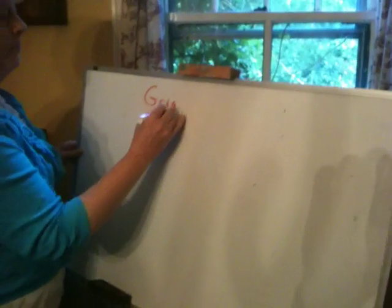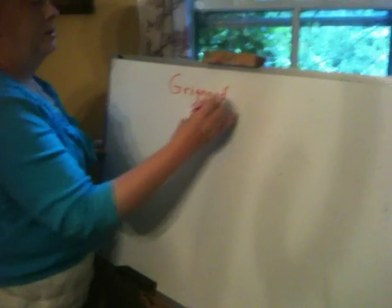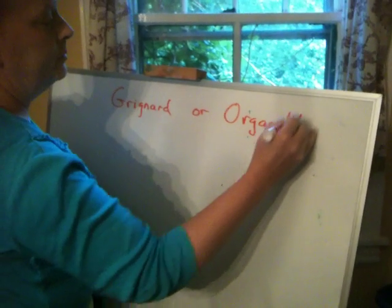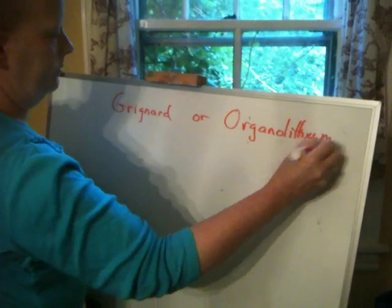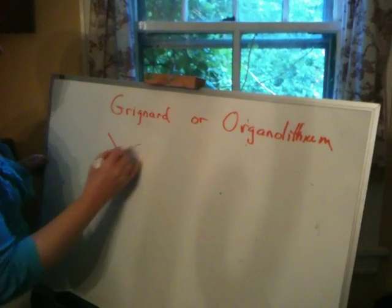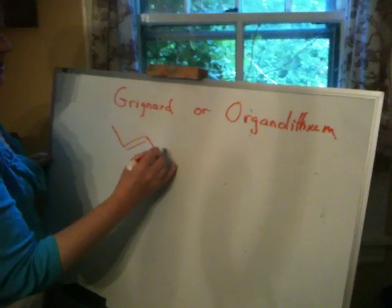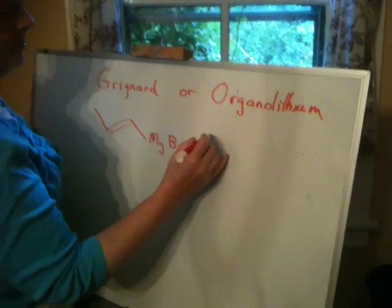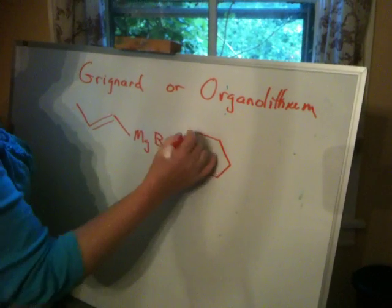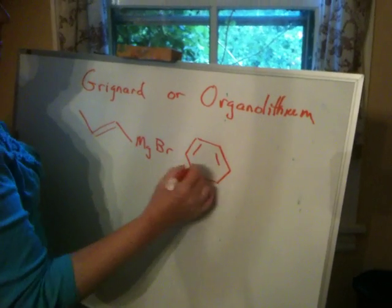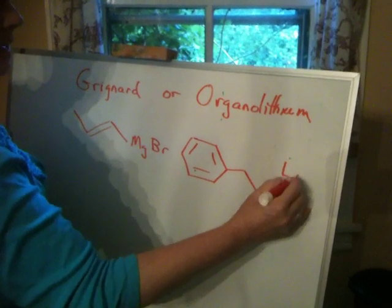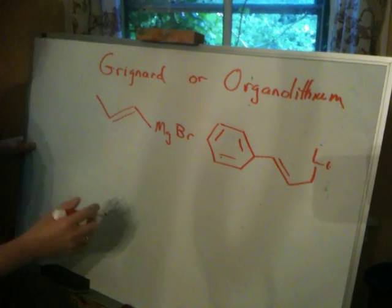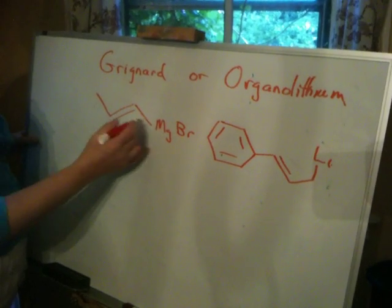So if I had a Grignard or organolithium, it would have this kind of structure. And you should know how to make these now. Grignards are always made from halides. Or if you had something like this, with a double bond there — the way these behave, for the most part, is they behave like anions.